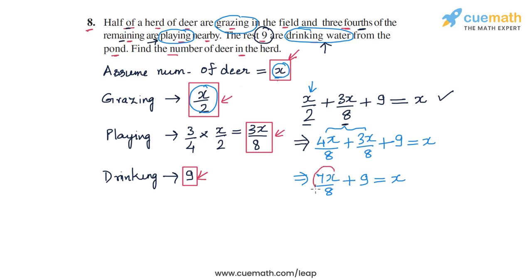Now I can take this 7x by 8 term and transpose it to the right side so we can combine the variable terms. I'll get 9 on the left-hand side, and on the right-hand side, I'll get x minus 7x by 8.